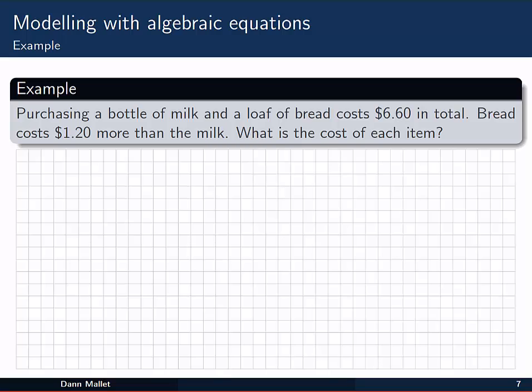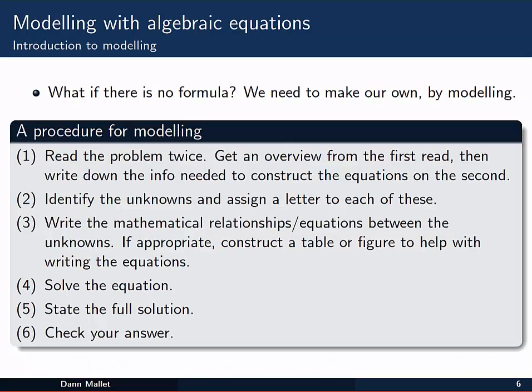Let's have a look at this simple sort of everyday problem here. If I'm purchasing a bottle of milk and a loaf of bread, and that costs $6.60 in total. Bread costs $1.20 more than milk. I want to know what's the cost of each item. Give yourself a little bit of time now, following through this process, or one that you might like to use yourself to try to get to the answer for this problem.